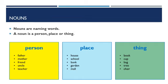For place, you can say house, school, bank, garden, mall, or any place — that is a noun. Among things, you can say any word for a thing, for example: book, cup, bag, tree, chair. You can see things all around you. All the names of things are called nouns. All the names of places are called nouns. And all the names of persons are called nouns.